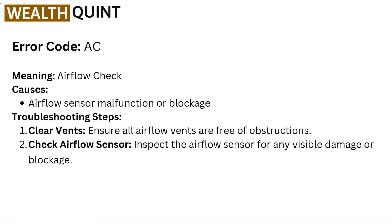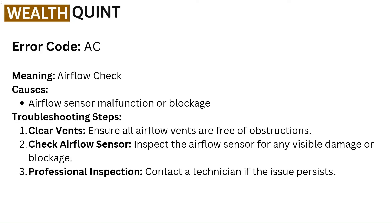Error code AC — meaning Airflow Check. Causes: airflow sensor malfunction or blockage. Troubleshooting steps: Clear vents — ensure all airflow vents are free of obstructions. Check airflow sensor — inspect the airflow sensor for any visible damage or blockage. Professional inspection — contact a technician if the issue persists.